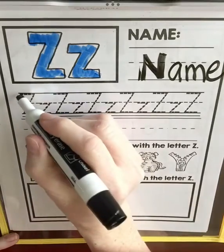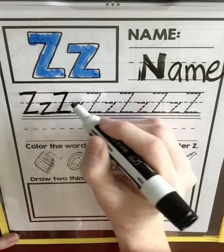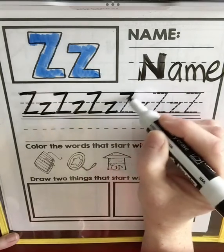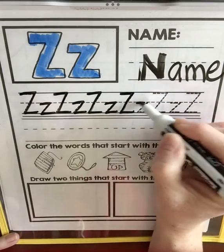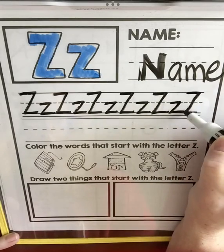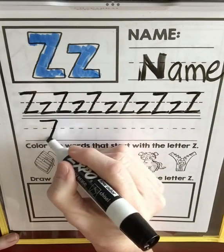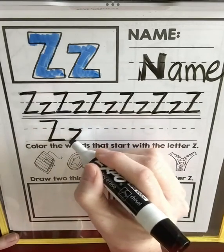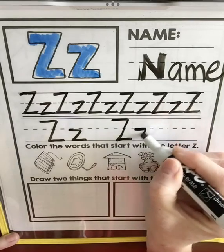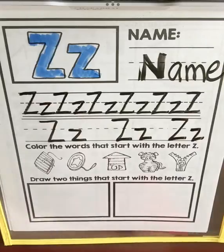Let's trace them — capital Z, lowercase z. Make sure you're holding your pencil a-okay and also make sure you're using a pencil and your nicest neatest writing. Right here we'll do our independent writing, capital and lowercase, and you can do it three times.